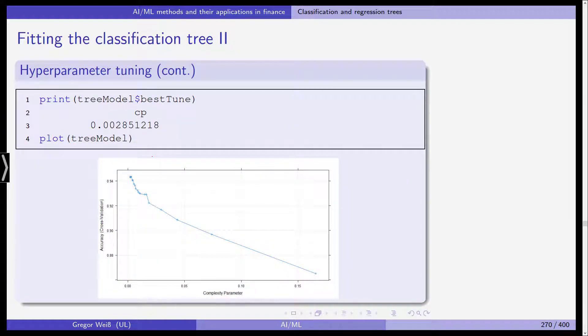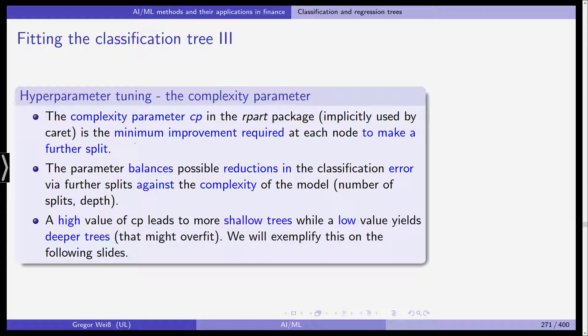What happens here? If we print out the tree model and the best tuning parameter, it is the complexity, which is given by an optimal parameter here of 0.00285 and so on. As you can see from the plot here, with increasing complexity, you actually get fewer accuracy from cross-validation. This is what comes out if we plot tree model. This complexity parameter, CP, is the minimum improvement required at each node to make a further split.